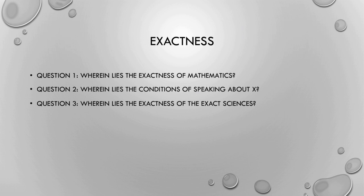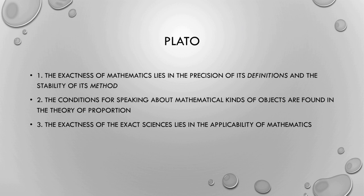I'm going to begin with Plato. What I want to argue is that the exactness of mathematics lies in the precision of its definitions and the stability of its method. That's a theme that's going to run through this entire talk. For Plato, the conditions for speaking about mathematical kinds of objects are found in a theory of proportion, and the exactness of the exact sciences lies in the applicability of mathematics.